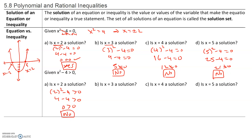Notice what's happening. For the equation, x equals 2 was a solution because it made the equation a true statement. But for this inequality, it is not a solution because it does not make the inequality into a true statement.